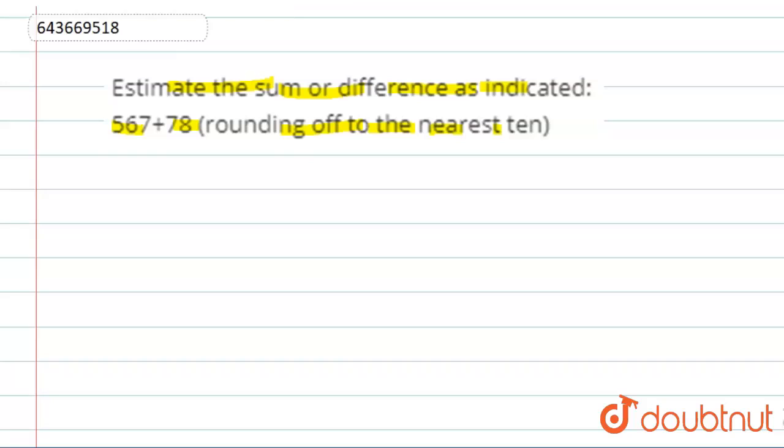For nearest 10, we will find the last digit. If the last digit, the unit place digit, is greater than or equal to 5, then we will add 1 to the tens place.